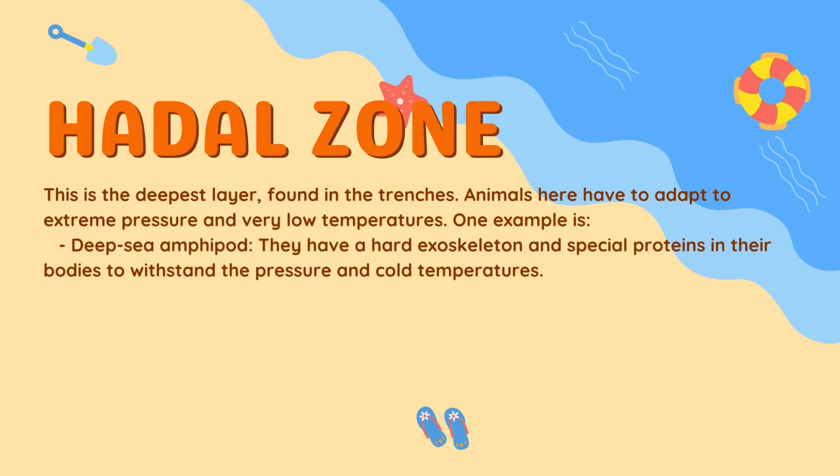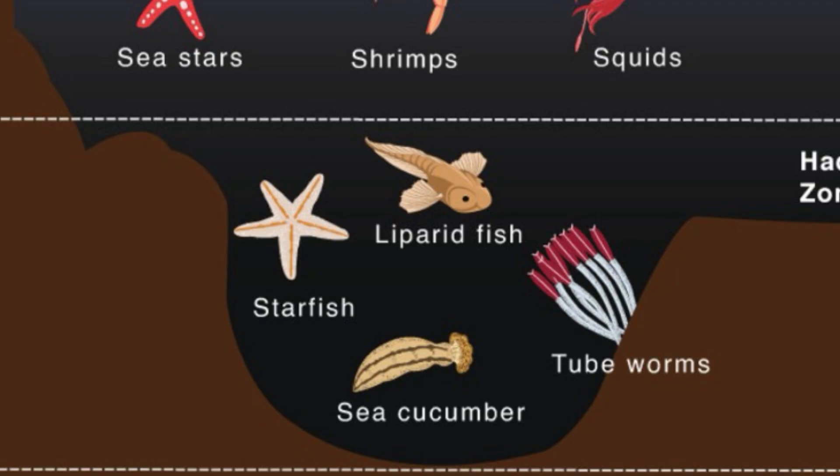In the hadal zone — the deepest layer, found in the trenches — animals have to adapt to extreme pressure and very low temperatures. One example is the deep sea amphipod, which has a hard exoskeleton and special proteins in its body to withstand the pressure and cold temperatures. There are many more fascinating creatures in each layer of the ocean.